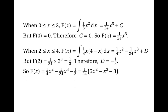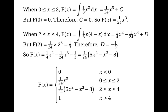We can now write the full CDF: F of x is 0 when x is less than 0; 1 over 24 times x cubed when x is between 0 and 2; 1 over 24 times (6x squared minus x cubed minus 8) when x is between 2 and 4; and 1 when x is greater than 4. That finishes the third method.